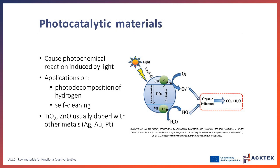Photocatalytic materials are substances that can cause a photochemical reaction when exposed to light. This can lead to applications such as photodecomposition of hydrogen, degradation of organic pollutants, or reduction of carbon dioxide, but in textiles the most common use is to develop self-cleaning effects. Common photocatalytic materials used in textiles include titanium dioxide and zinc oxide, usually deposited as a thin film and doped with some metals. Photocatalytic textiles have potential applications in air and water purification, and settings requiring great cleanliness, since they can break down bacteria, viruses, and other pollutants in contact with the fabric.